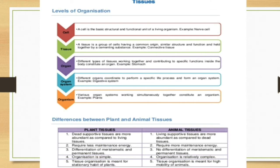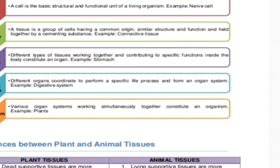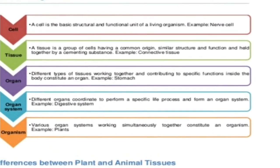Let us start and discuss the various levels of organization in a living organism. The basic structure is a cell, which we have already learnt in the previous chapter. Cell is the basic structural and functional unit. For example, a nerve cell, an epidermal cell, a guard cell, or any other plant cell.